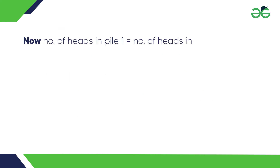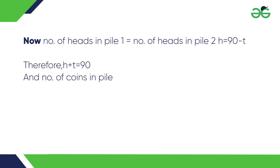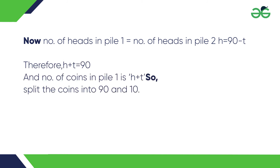Now, the number of heads in pile 1 equals the number of heads in pile 2, therefore both equal H. And the number of coins in pile 1 is H plus T. So, split the coins into 90 and 10.